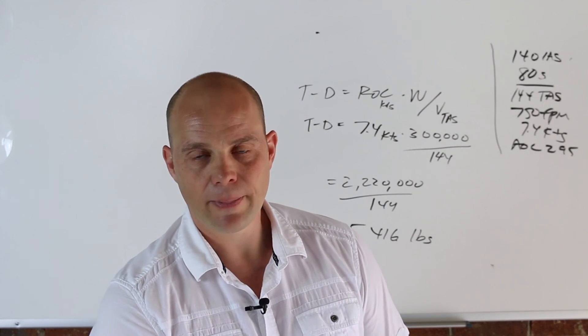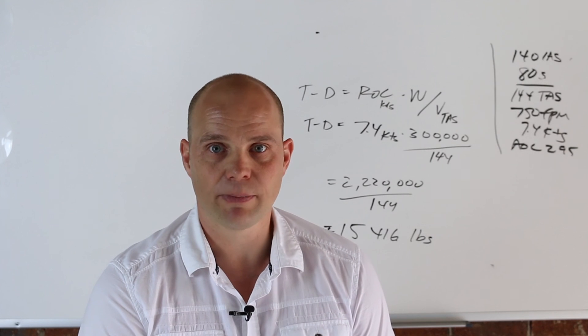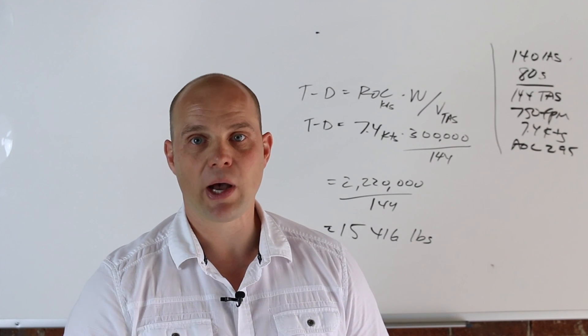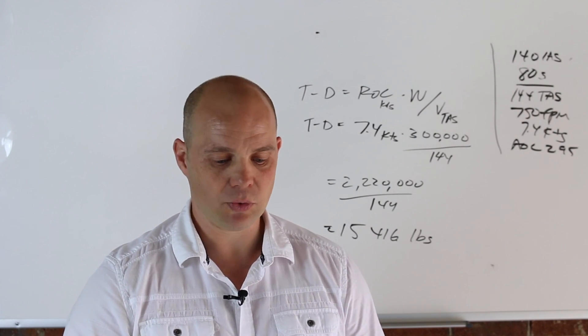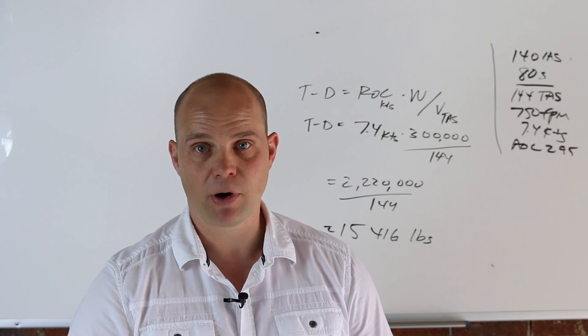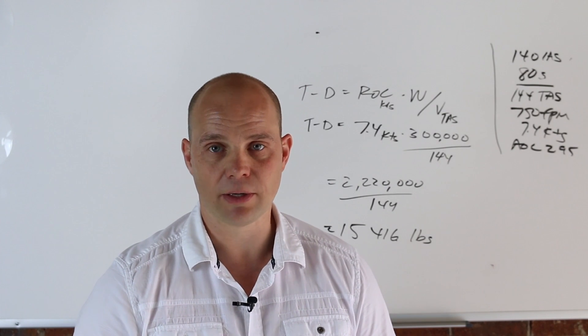So your excess thrust at Vy, if this was your Vy airspeed or your Vx, whatever it may be, you're going to get your excess thrust is 15,416 pounds. So that's how you solve that. That is not the actual answer, by the way. You're going to go through and find your Vy, your Vx, which we would have answered in part A, and then just do this and you're done.